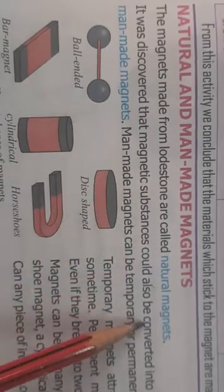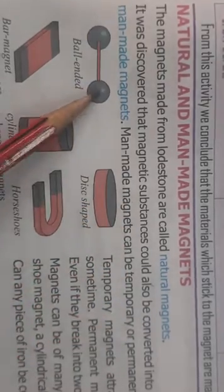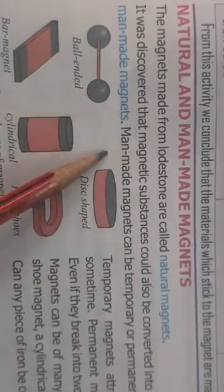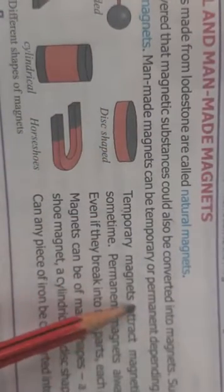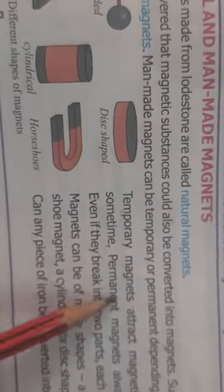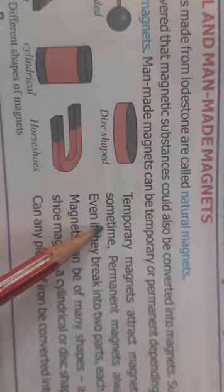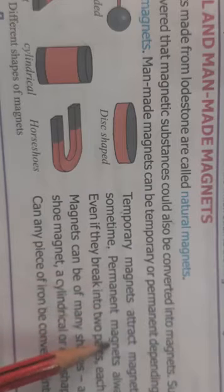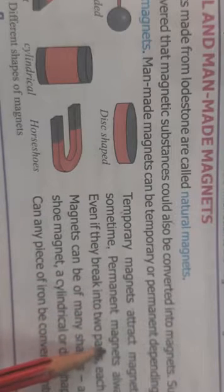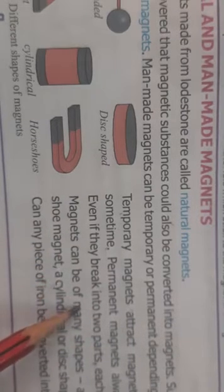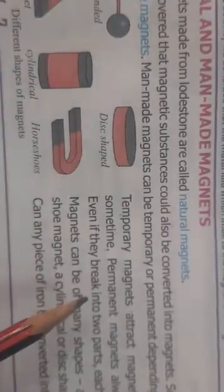When it was discovered that magnetic substances could be converted into magnets, people made them. Man-made magnets can be either temporary magnets or permanent magnets. Temporary magnets attract magnetic materials for a short period of time, and permanent magnets will always remain magnetic — even if they break into two pieces, both parts will also act as magnets.